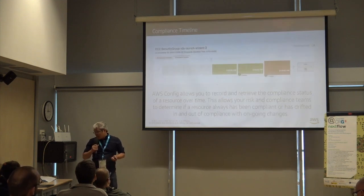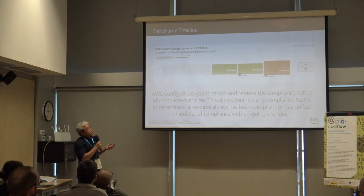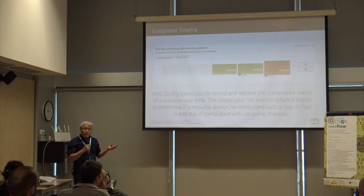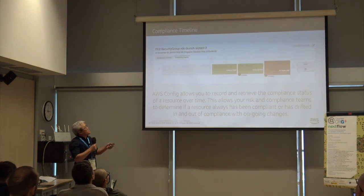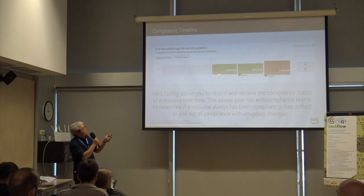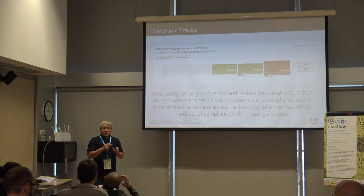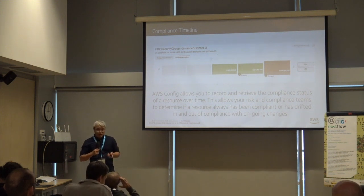One of the coolest resources we have is AWS Config. This is a service that allows you to track how your resources change over time. You can set up rules in AWS Config to notify you when your resources go out of compliance, and those rules can match your specific compliance needs. This timeline shows a resource trace — in green when it was compliant, then going red when it goes out of compliance. You can dig into this to see what the change was and who made the change, then go in and remediate it as necessary.